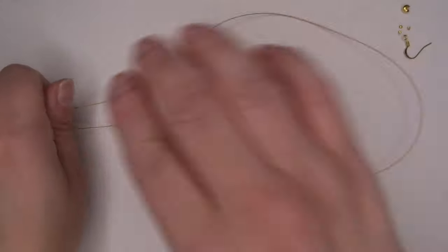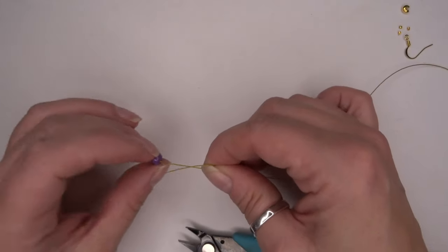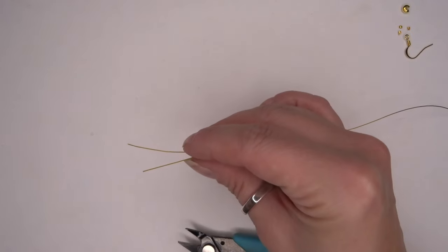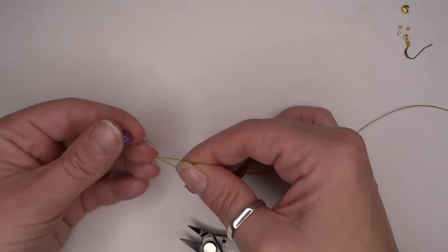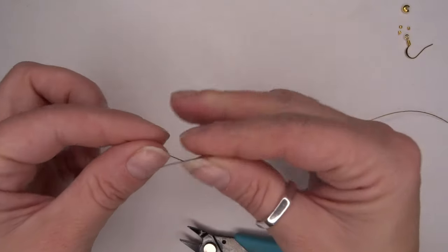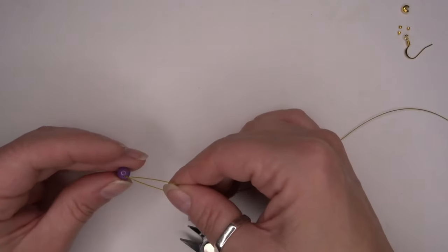So we've now got our beading thread. I'm going to take three of our gemstones and thread these on, allowing them to drop down to the center of our thread.